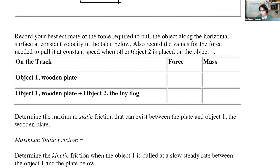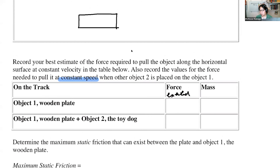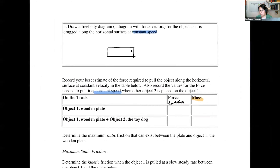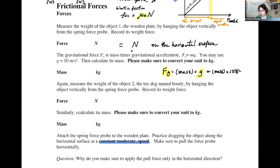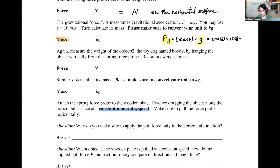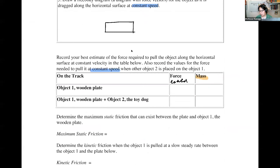When it's at constant speed, try to draw the free body diagram as accurately as possible. Start with the wooden plate: draw force vector arrows vertically down, vertically up, and horizontal, with accurate relative magnitudes. Also think about whether your free body diagram would change if the object is not moving at constant speed.